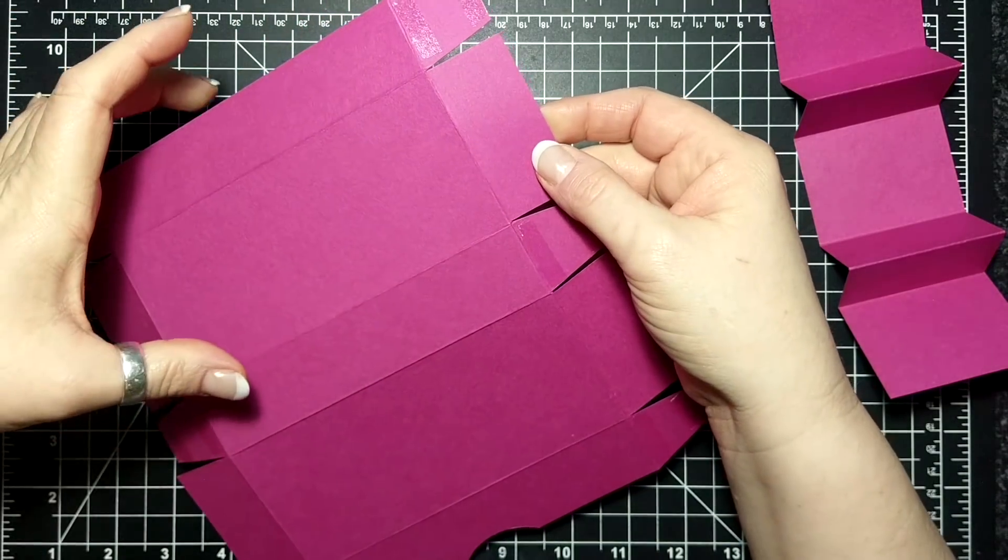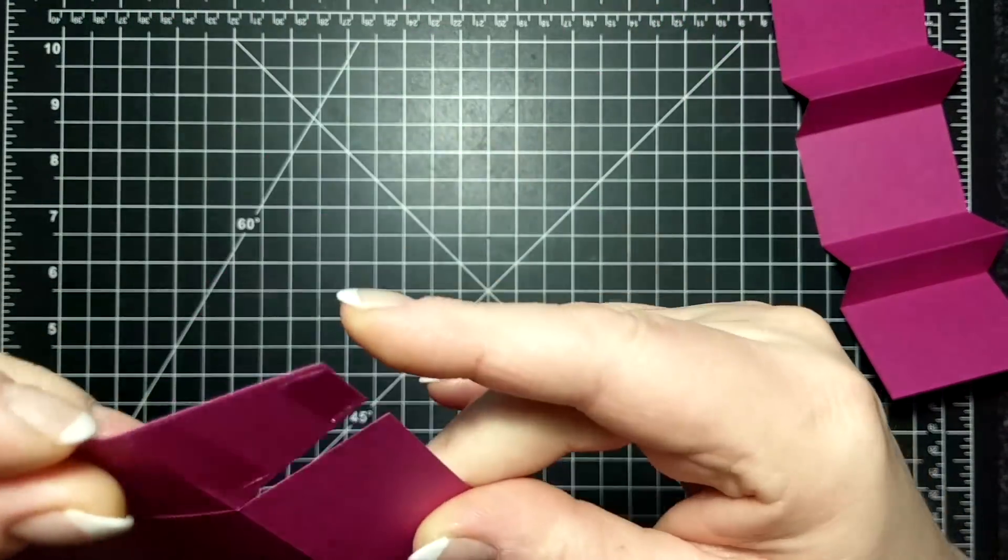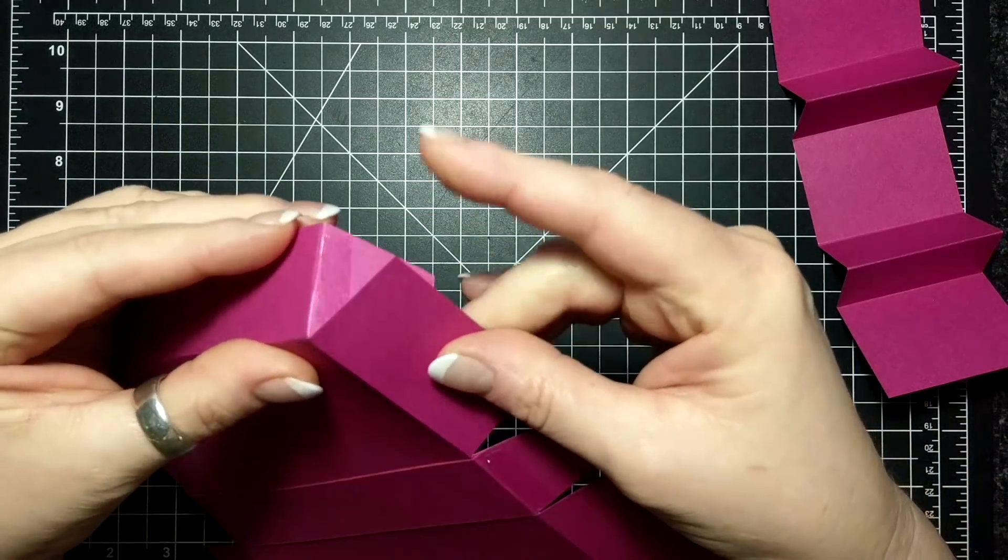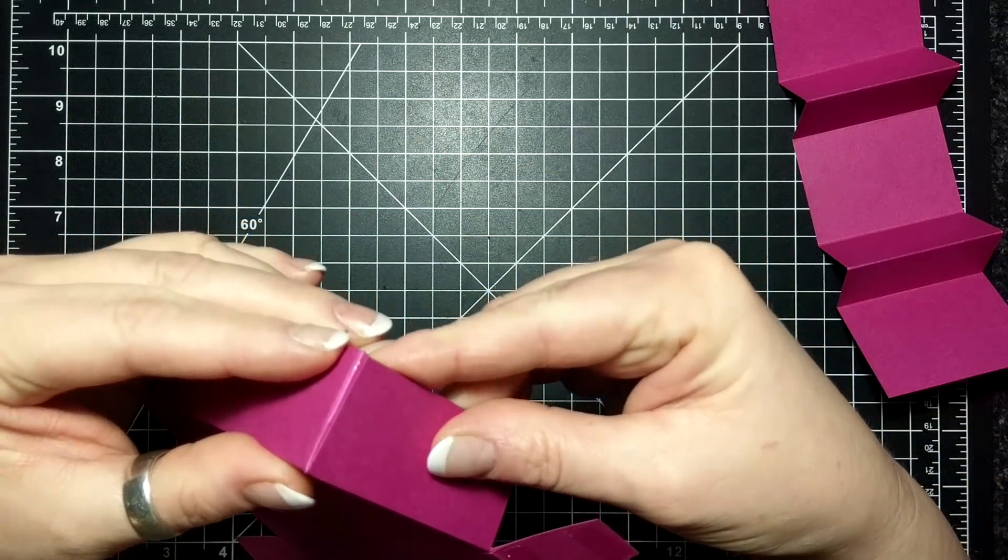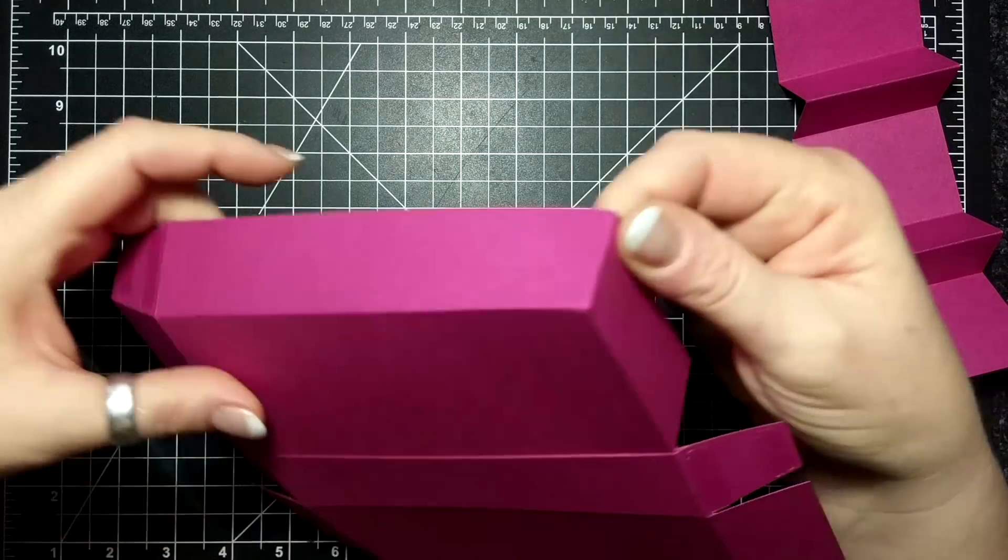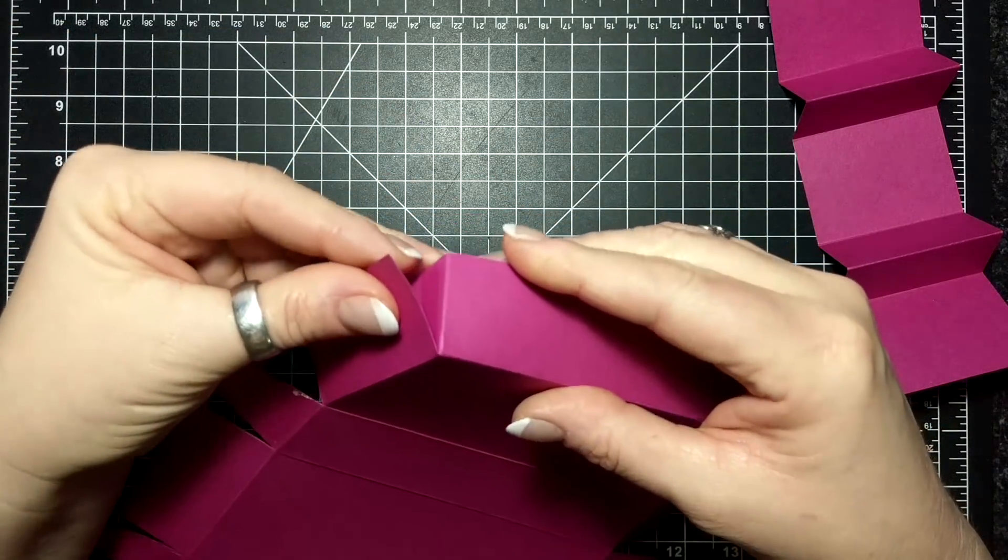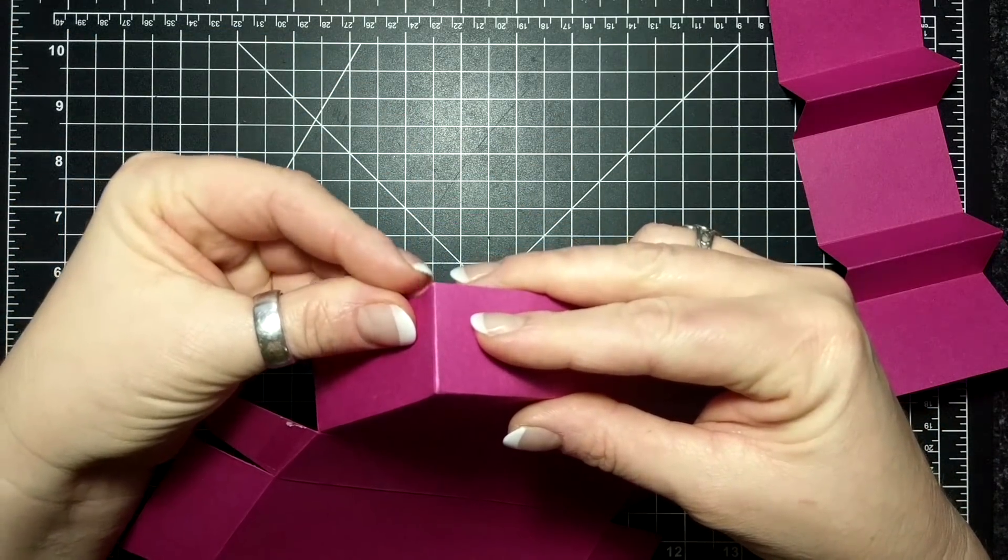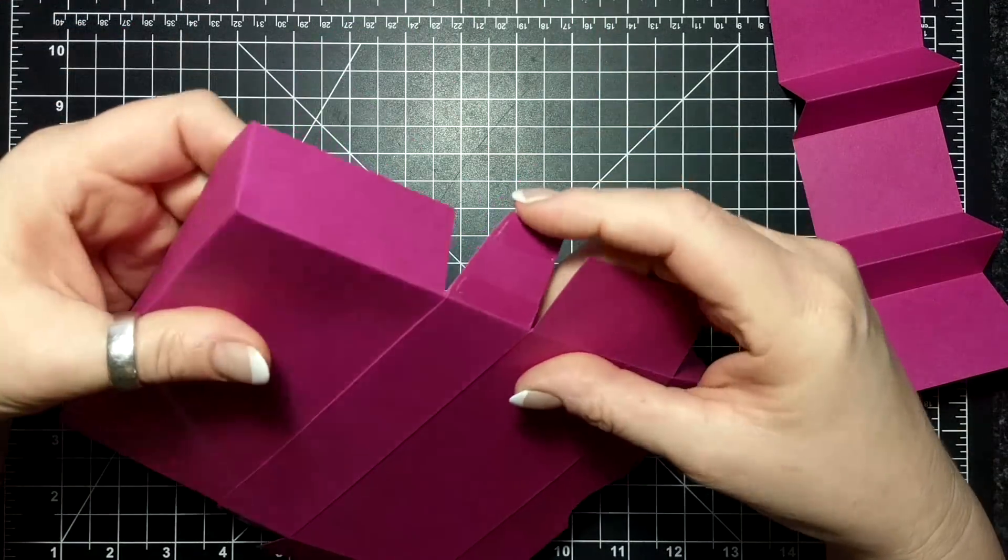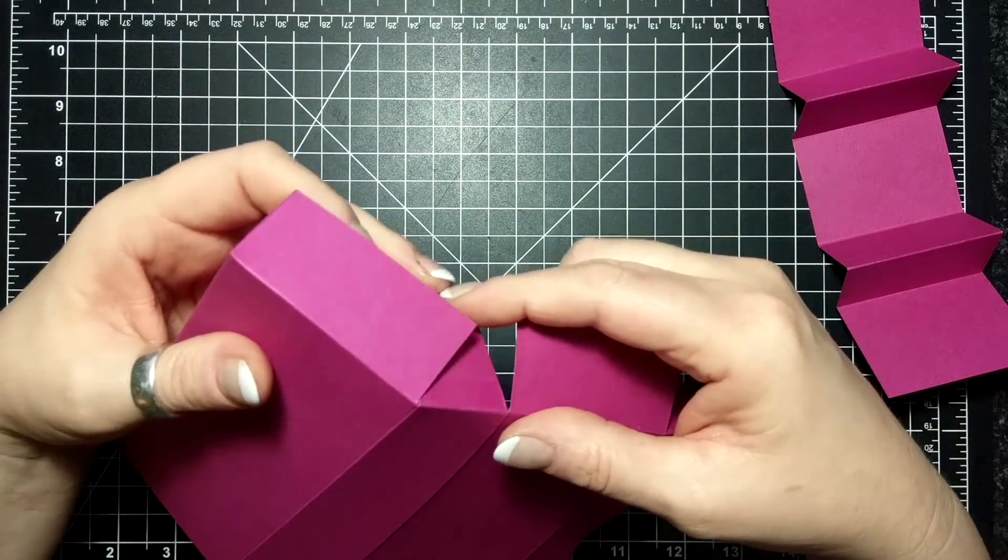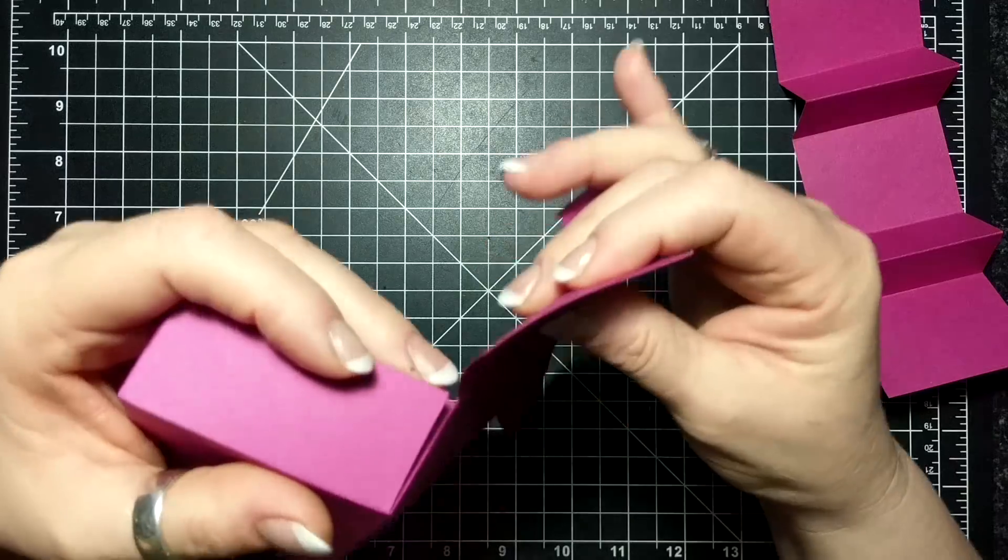I'm gonna start with the base of the box and I'm just going to take that free edge right up to the score line, just like that. Same with this side, free edge right up to the score line. Then the middle one we're going to attach to the base as well.